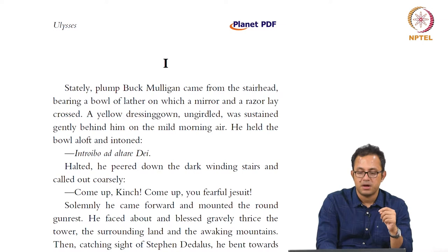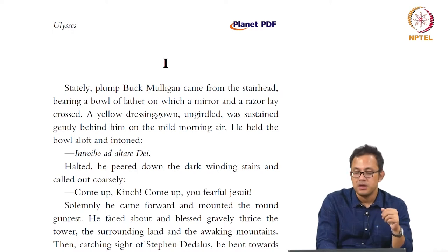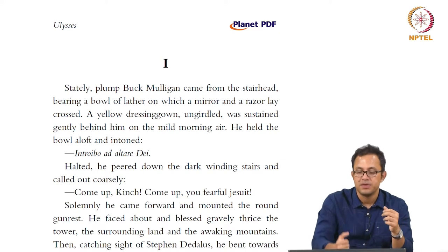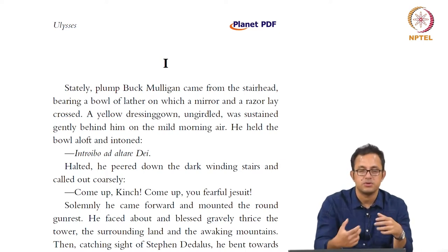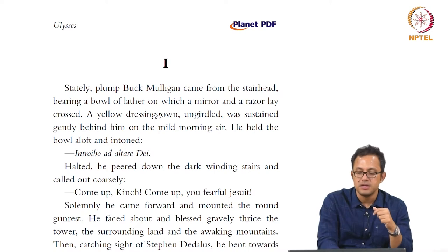"Stately, plump Buck Mulligan came from the stairhead, bearing a bowl of lather in which a mirror and a razor lay crossed. A yellow dressing-gown, ungirdled, was sustained gently behind him on the mild morning air. He held the bowl aloft and intoned: Introibo ad altare Dei." This is Latin for "I give myself to God's altar in hope of youth, in hope of eternal youth, in hope of eternal health."